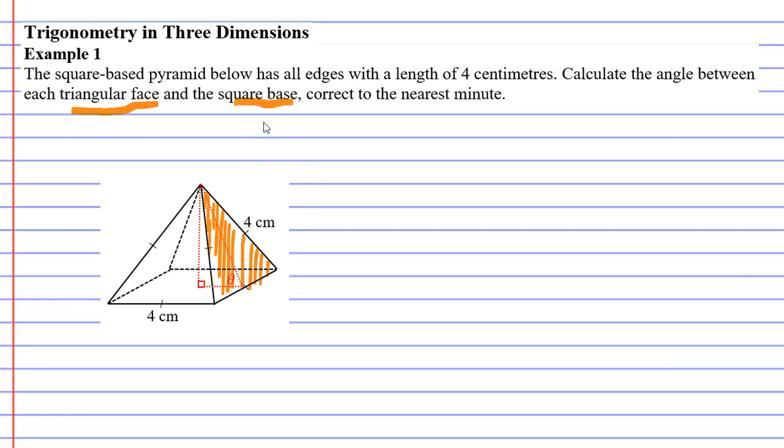And then we've got our square base, which is basically the square that's at the bottom of the pyramid. And finding the angle between these basically means if I go from my square base and angle up, what is this angle here?